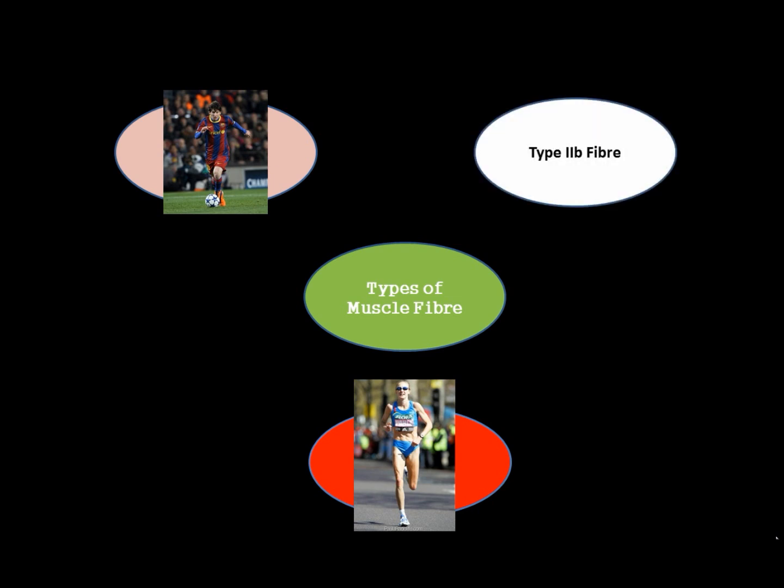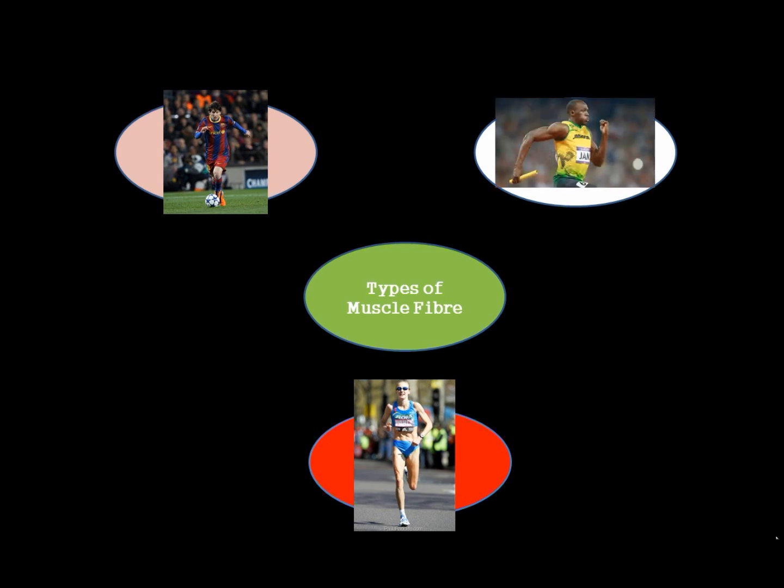Our third type of muscle fibre is Type 2B. This is the muscle fibre we use for short, sharp, explosive activities. In sport this could be something like the 100 metre sprint.